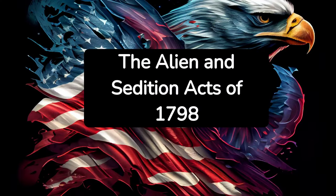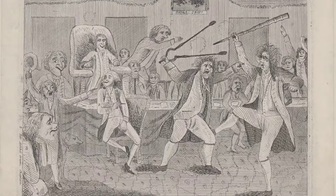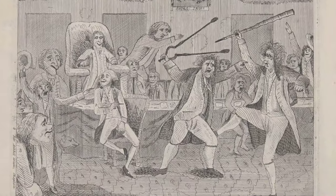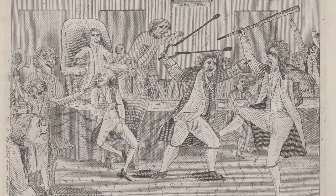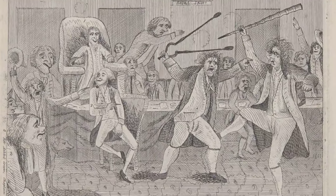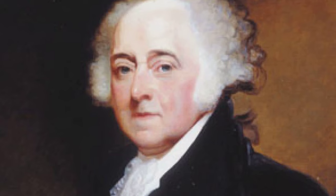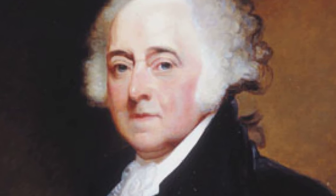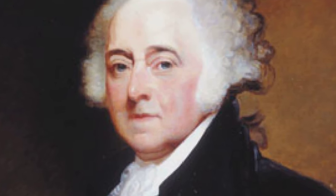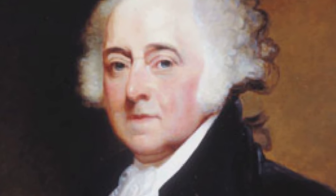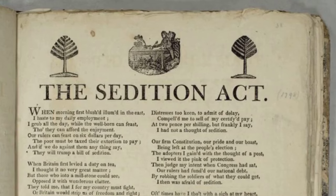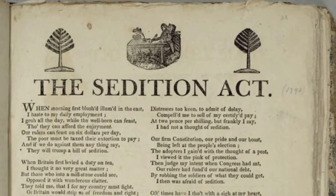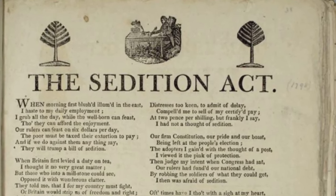7. The Alien and Sedition Acts of 1798. These laws allowed the deportation of non-citizens deemed dangerous and restricted speech critical of the government. The Alien and Sedition Acts were politically motivated, aiming to suppress opposition to the ruling Federalist Party. They heavily curtailed the democratic principles of freedom of speech and the press.